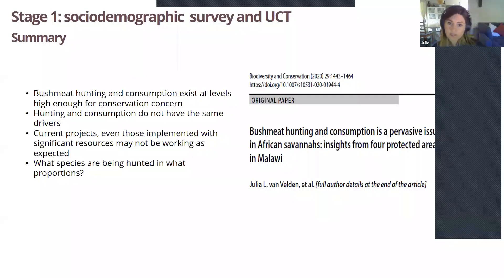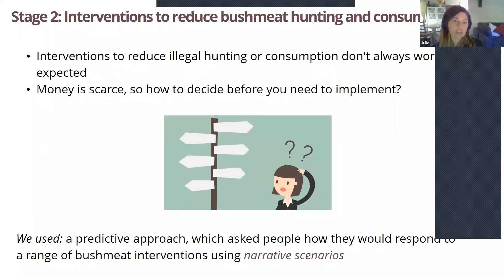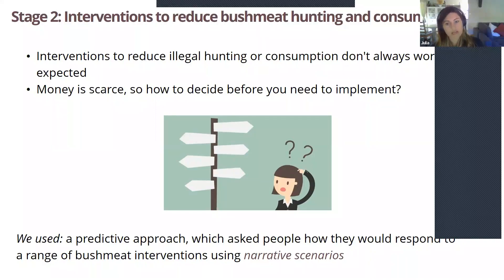If you'd like to learn more about this stage of the research, we've had a paper published in Biodiversity and Conservation. The next section of the research looked at interventions to reduce bushmeat hunting. Interventions in this context are very complex to implement and understand — they don't always work as expected. Given how many feedbacks and complications exist in a wicked problem, it's very difficult for practitioners to choose what to implement when money is scarce. We decided to use a predictive approach — asking people how they would respond to a range of different interventions prior to their implementation, using a scenario approach.